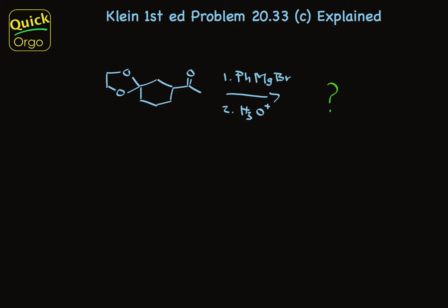In this problem, Klein asks us to draw the structure of the product that's formed when the structure shown is treated first with phenylmagnesium bromide and secondly with aqueous acid. Now it's just fine to write the sequential conditions that are shown here. It's a convenient shortcut.